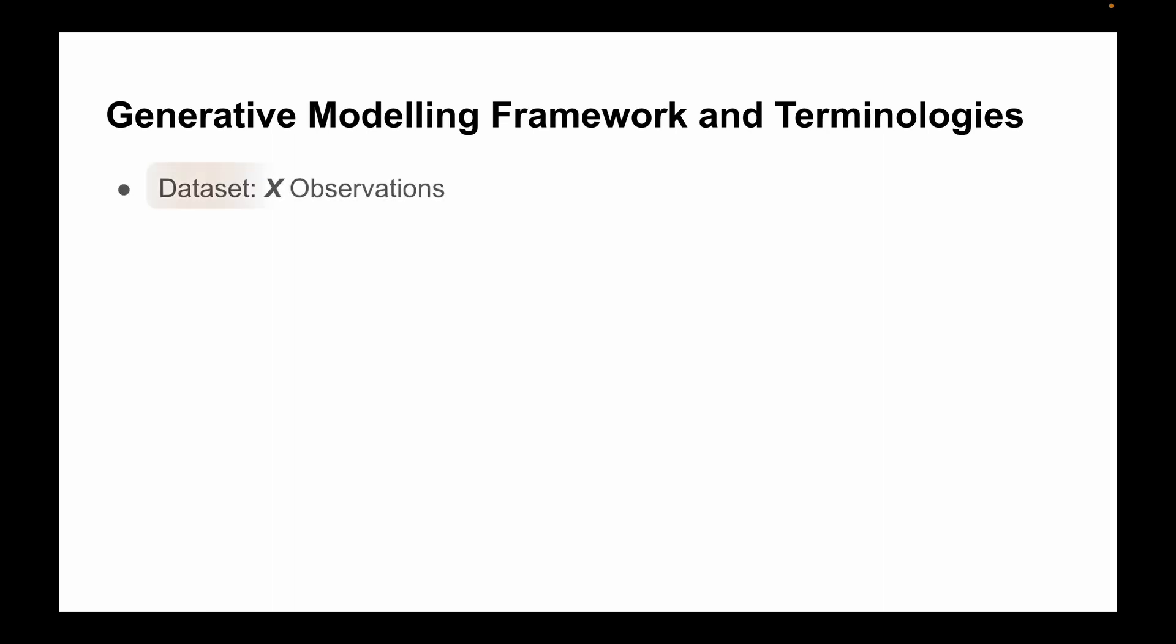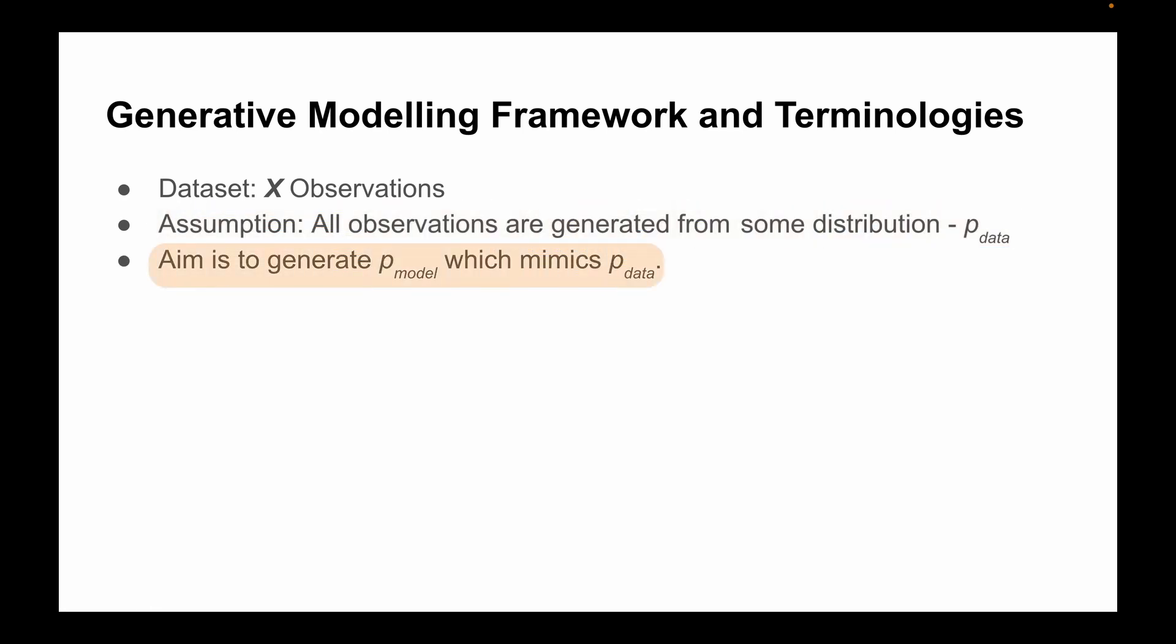The first is dataset, which contains X number of observations. The second is assumption: all observations are generated from some distribution, that is pdata. The aim of this generative model is to generate pmodel which mimics the input pdata.